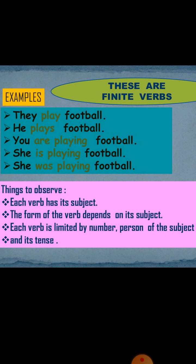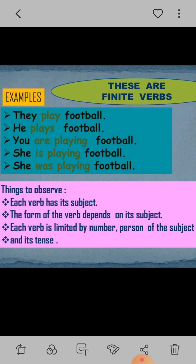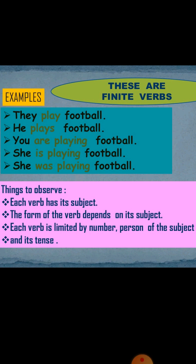Things to observe: each verb has its subject. The form of the verb depends on its subject. Each verb is limited by the number of person of the subject and its tense.